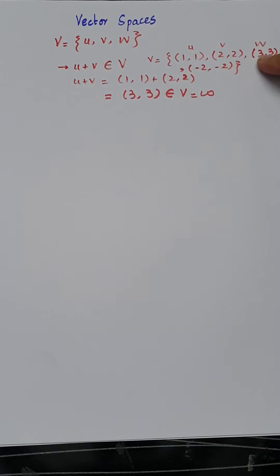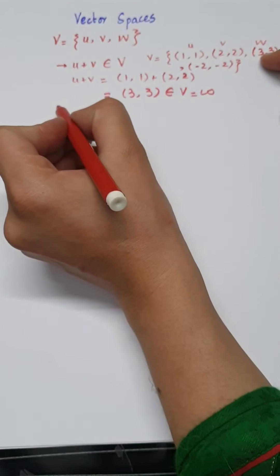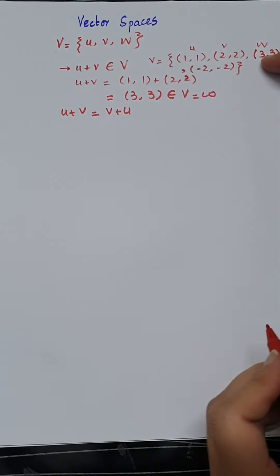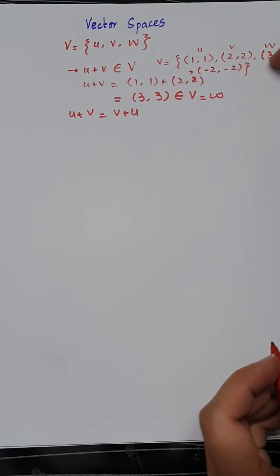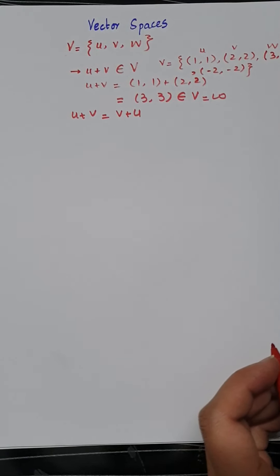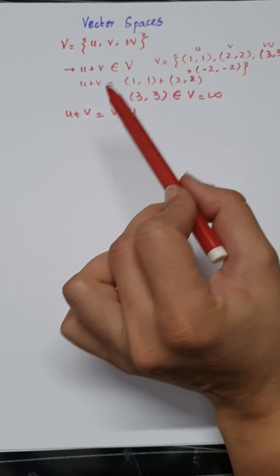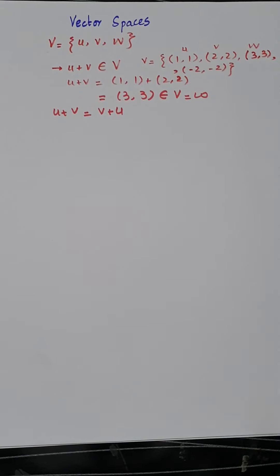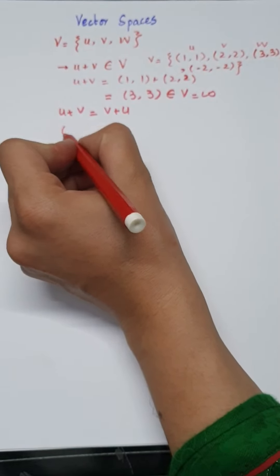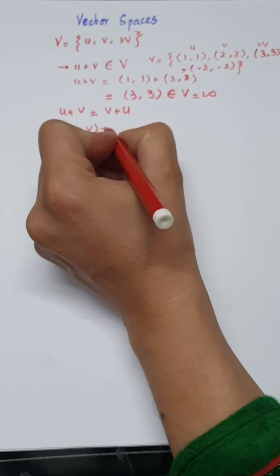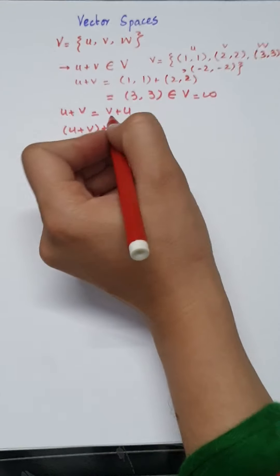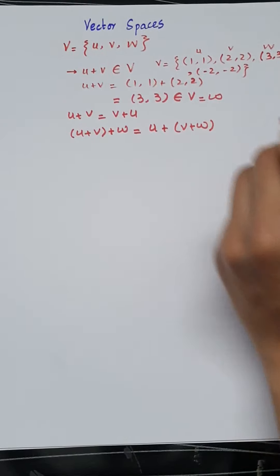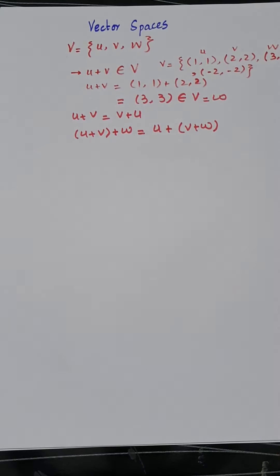The second property is U plus V should equal V plus U — this is also called the commutative law. Just as the commutative law holds for real numbers, it must also hold for vectors in a vector space. The third property is the associative law: (U plus V) plus W should equal U plus (V plus W). This is called the associative law of addition.